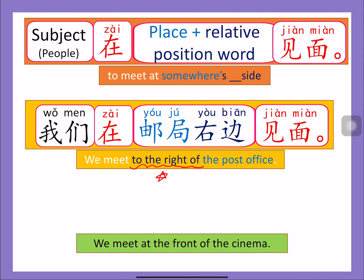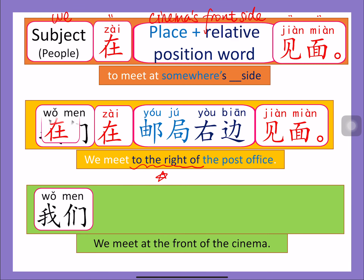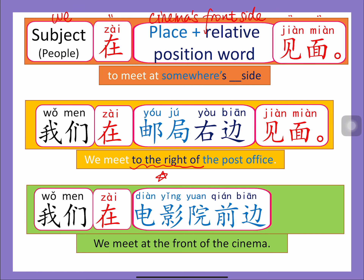怎么说 'We meet at the front of the cinema'? The structure is: 我们 + 在 + cinema + front side + 见面. So it should be 我们在电影院前边见面. 答对了吗？ Did you get it right? 我们在电影院前边见面.